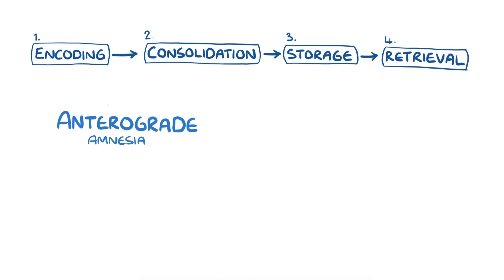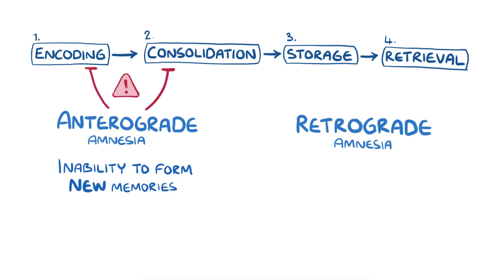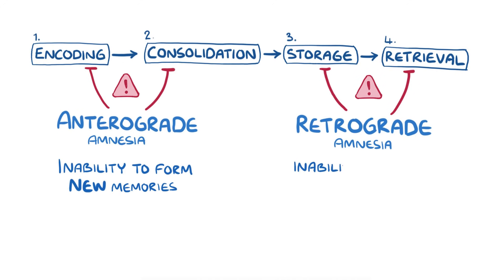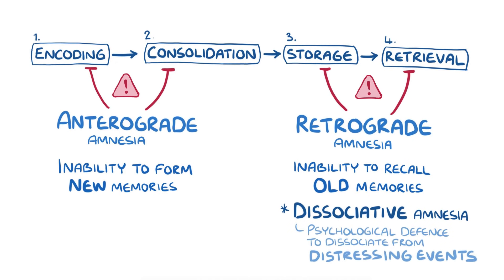As a quick recap: anterograde amnesia usually affects the encoding or consolidating stage of memory formation, and causes a person to be unable to form new memories. Retrograde amnesia usually affects the storage or retrieval stage of memory formation, and causes a person to be unable to recall old memories. One type of retrograde amnesia is dissociative amnesia, which is thought to be a psychological defence to dissociate or detach from distressing events in the past.